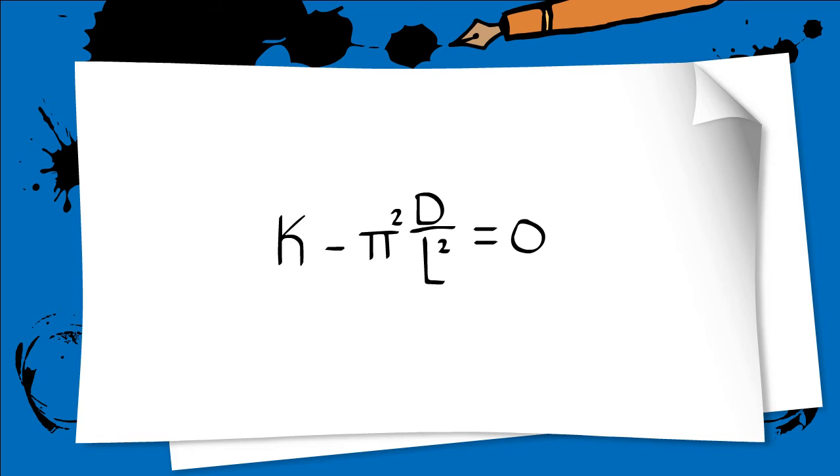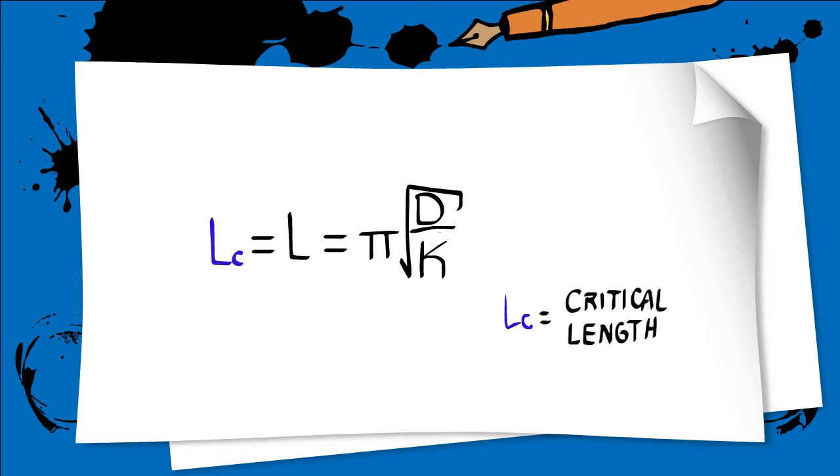We are interested in how population depends on the length L, and we say that the critical length L sub c equals pi times square root of d over k, which we obtain by rearranging the terms of the argument of the exponential for the first Fourier mode.